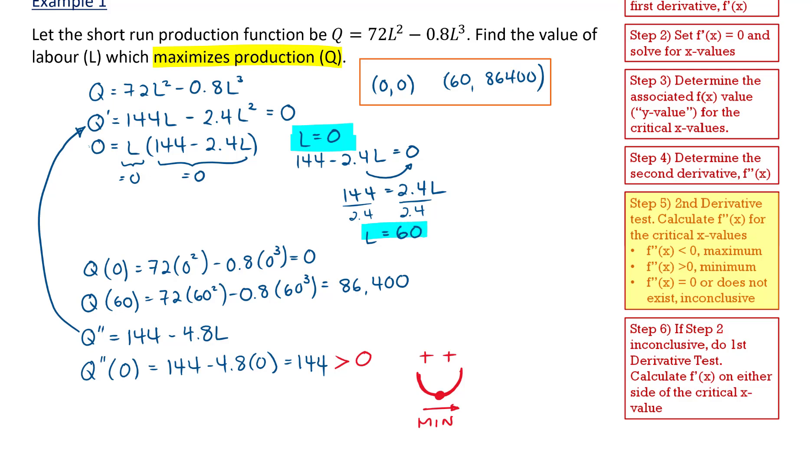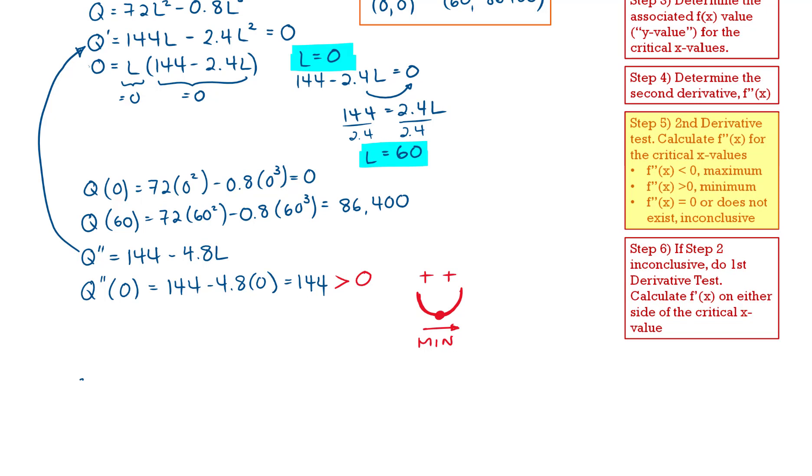Now we're going to repeat this process for when L is equal to 60, the other critical point. So the second derivative when L is equal to 60, we have 144 minus 4.8 times 60. This gives me negative 144.